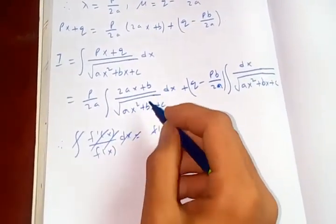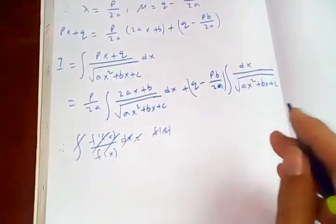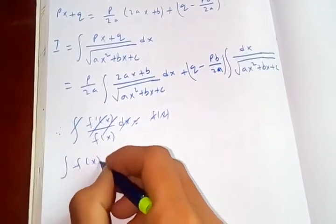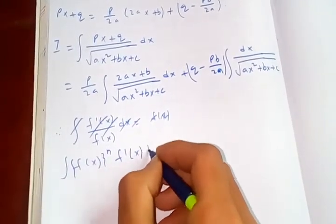Because this denominator has a power - square root means ax square plus bx plus c to the power half. So it has a power, so you are going to use f of x to the n, f prime of x dx.